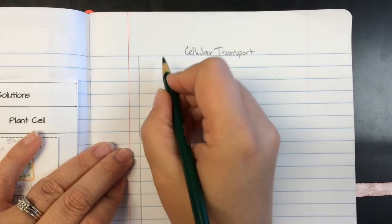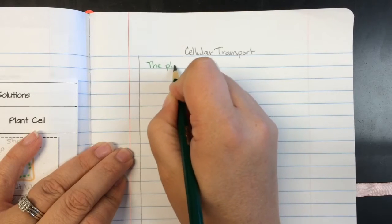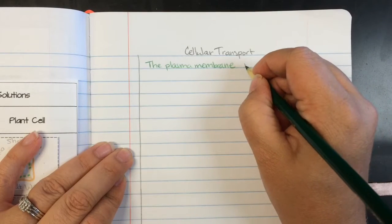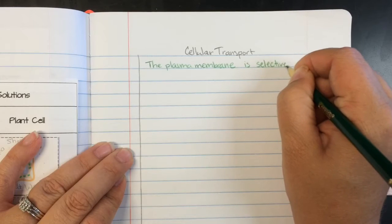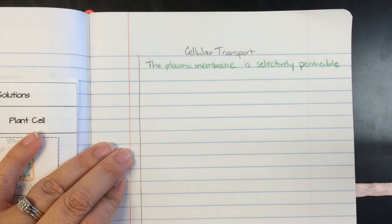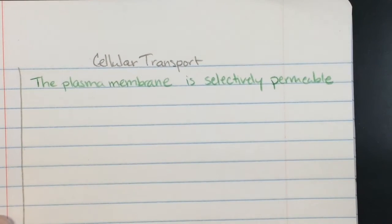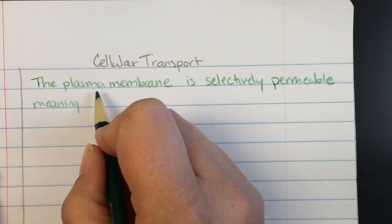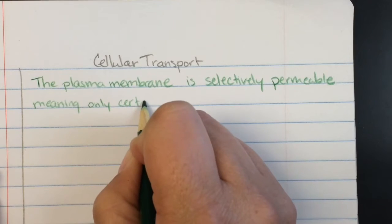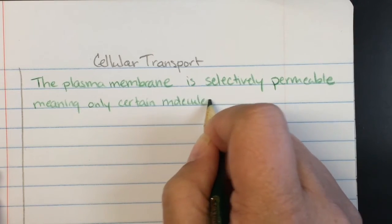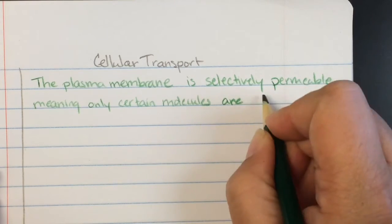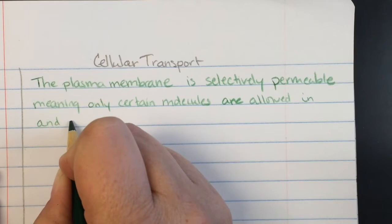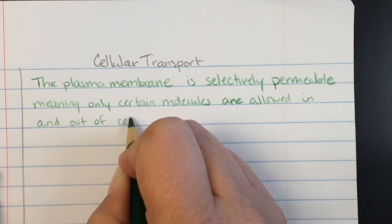So let's start out with the fact that we have a plasma membrane. The plasma membrane is selectively permeable, meaning only certain molecules are allowed in and out of cells.